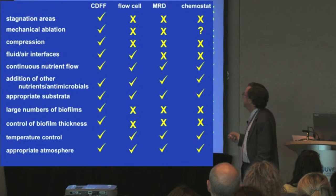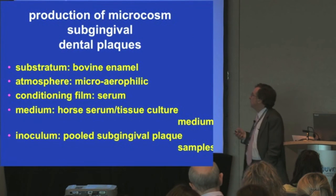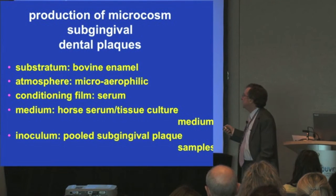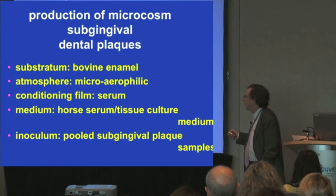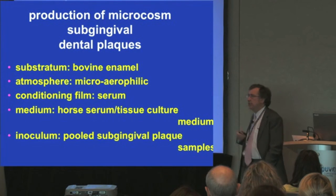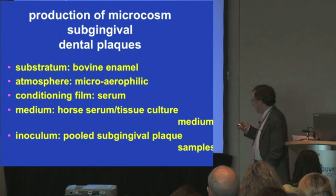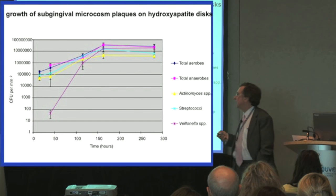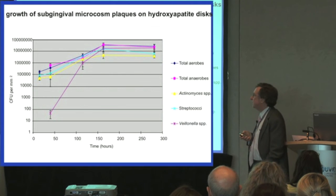The CDFF — the constant-depth film fermenter — is far better than many other classic biofilm-producing devices. When growing up subgingival dental plaques, we've used an enamel substratum, created a microaerophilic atmosphere, used a conditioning film consisting of serum, and a medium of horse serum with tissue culture fluid, which is supposed to mimic gingival crevicular fluid. As inoculum, we've used pooled subgingival plaque samples. Analysing these biofilms, we find they have a composition similar to what you'd get in subgingival plaques.